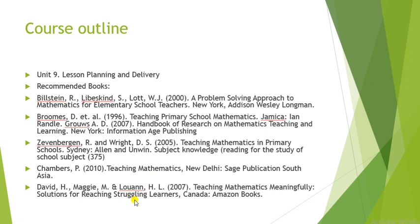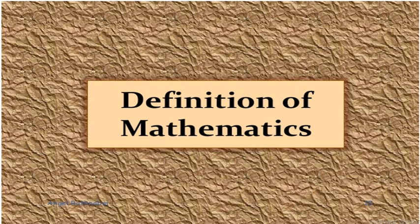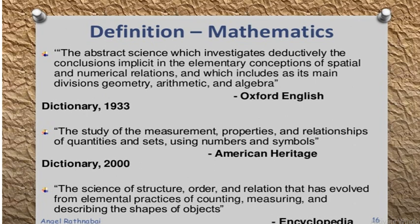This was all about the course outline of teaching of mathematics. We have briefly discussed all nine chapters in this video — what we are going to learn in this course. Now we will discuss different definitions of mathematics put by different authors and different sources. The first definition is from the Oxford English Dictionary, which states: 'the abstract science which investigates deductively the conclusions implicit in the elementary conceptions of spatial and numerical relations, and which includes as its main divisions geometry, arithmetic, and algebra'.